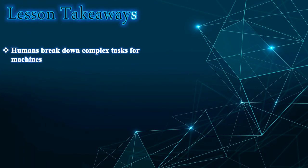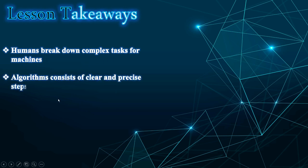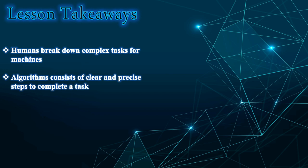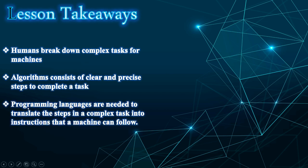Lesson takeaways: humans break down complex tasks for machines using algorithms, which consist of clear and precise steps. Programming languages are needed to translate these steps into instructions that a machine can follow.